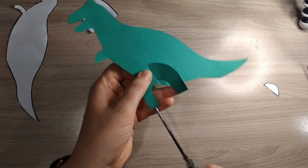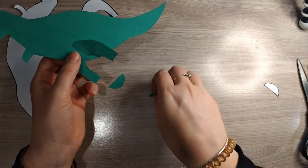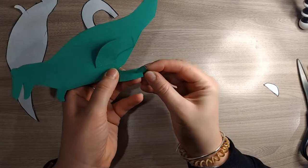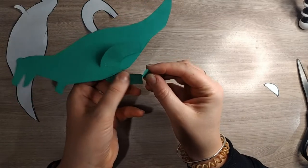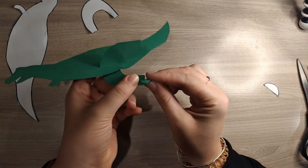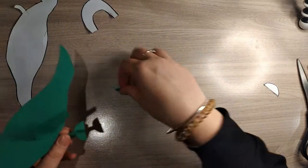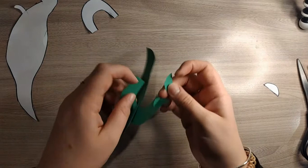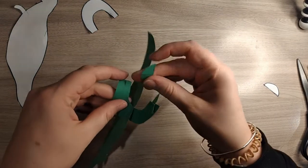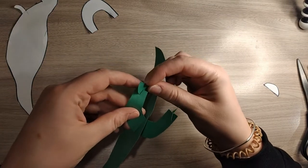And when you match up the lines, it goes on perfectly. So here you can see I'm matching up the two little snips together. And there we have our 3D T-Rex.